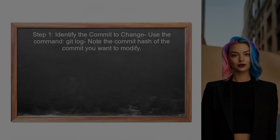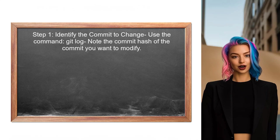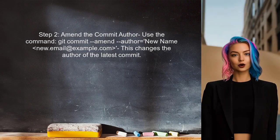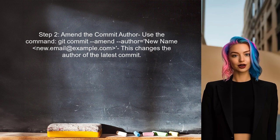To change the author of a commit in GitHub, you first need to identify the commit you want to modify. This can be done by using the command git log to view the commit history. Next, use the command git commit --amend --author, followed by the new author's name and email. This will allow you to change the author information for the most recent commit.